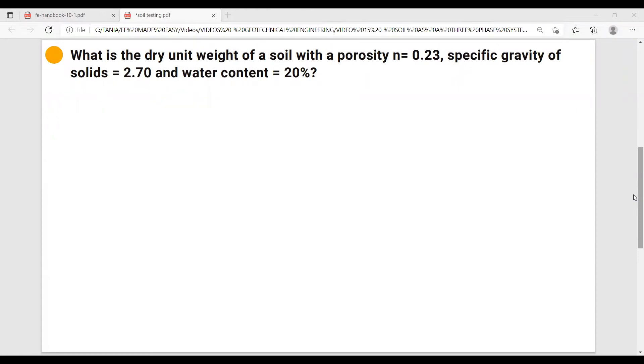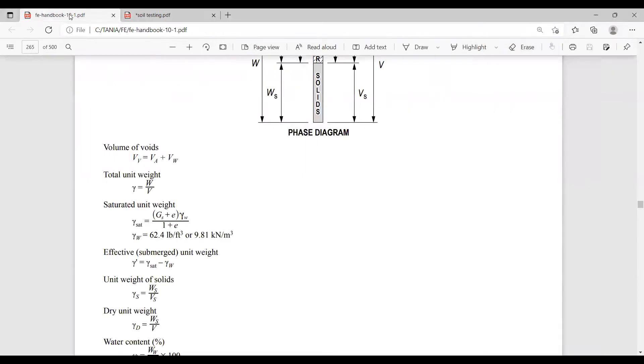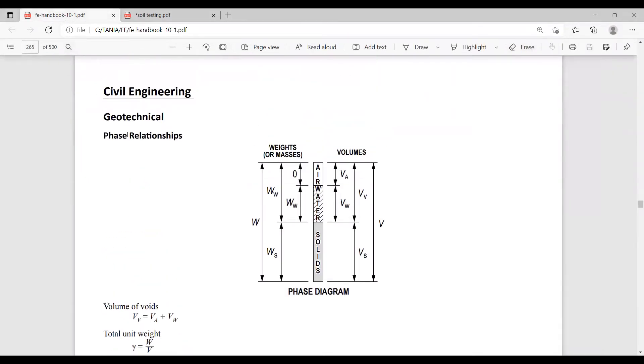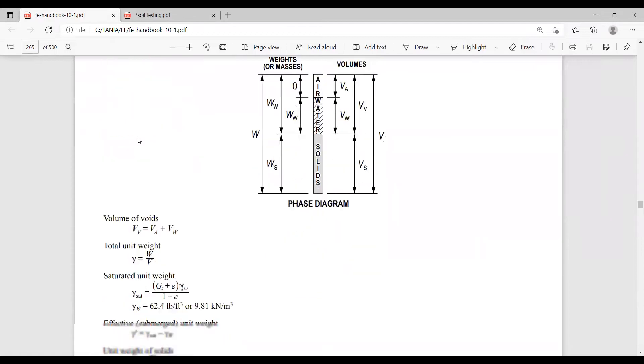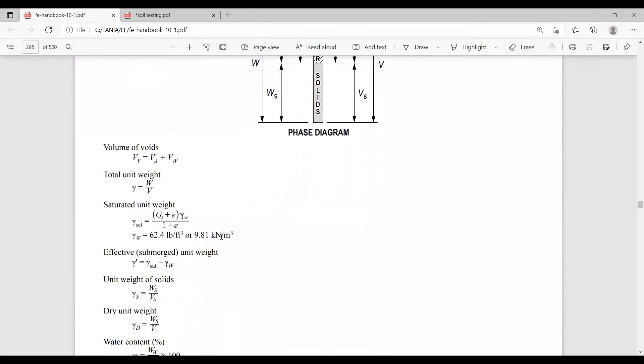Now let's move on with the problem. What is the dry unit weight of a soil with the porosity n equals 0.23, specific gravity of solids 2.7, and water content 20 percent? Let's go ahead and look in our FE handbook for the formula for the dry unit weight. Here is our civil engineering geotechnical part and we have all these formulas.